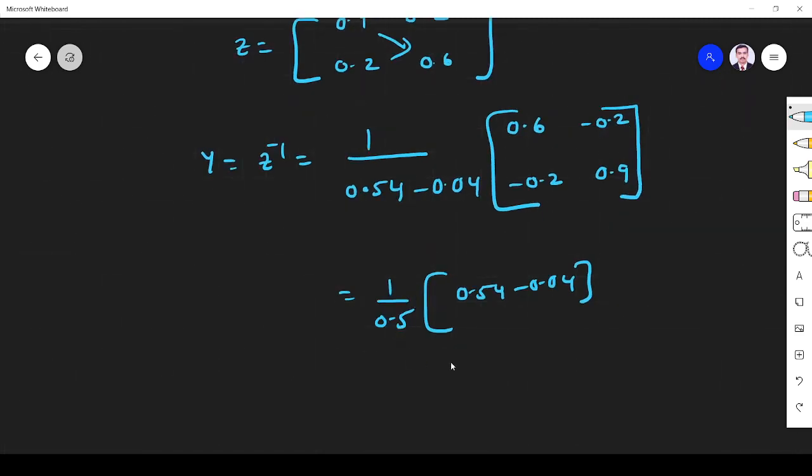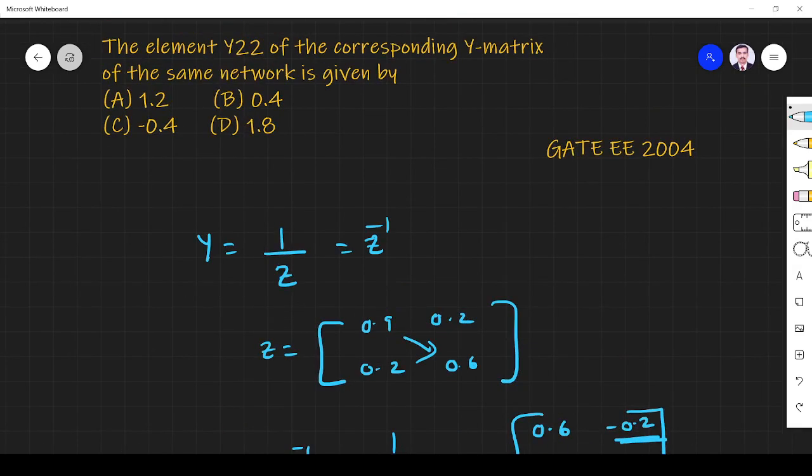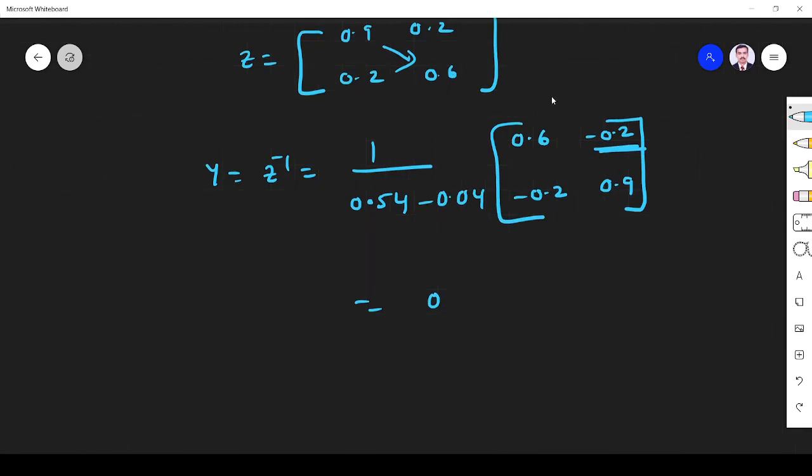So it is okay. So no need to find it. I have to find Y22 only. So this is 1 by 0.5. What they ask is Y22. Y22 is nothing but this element. This is Y11, Y12, Y21, Y22.